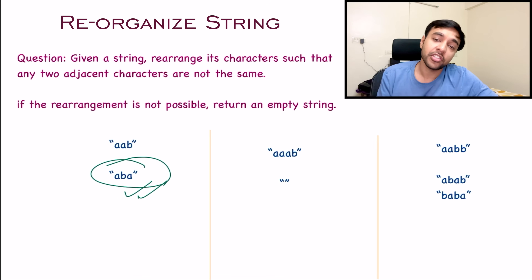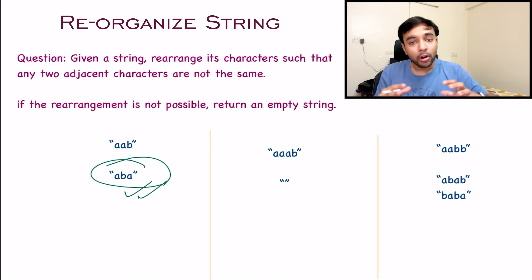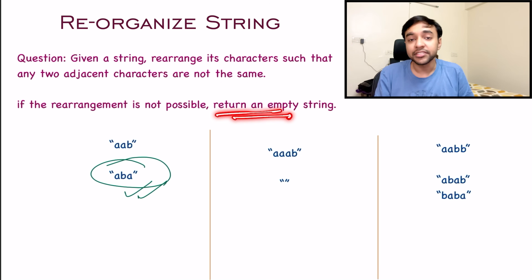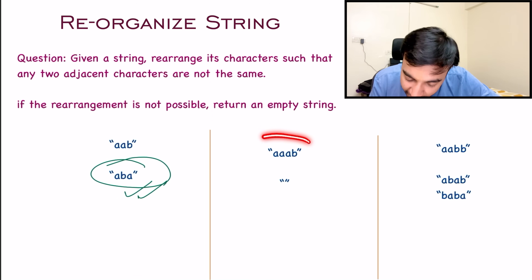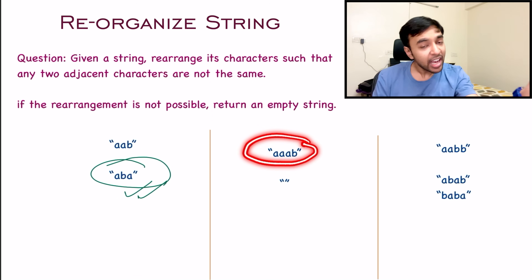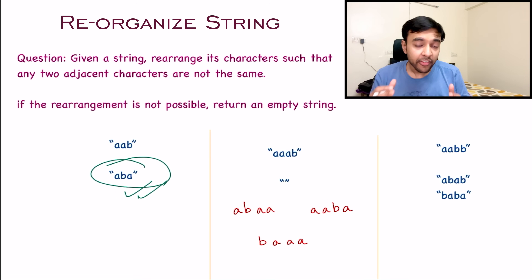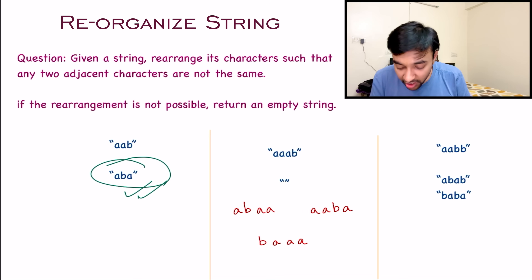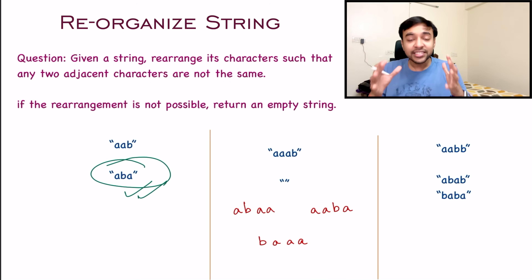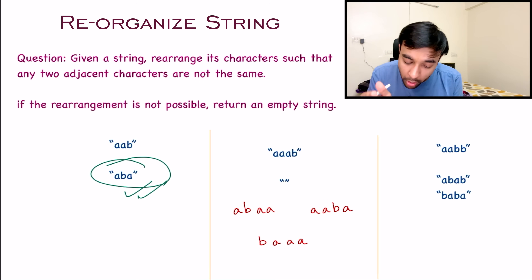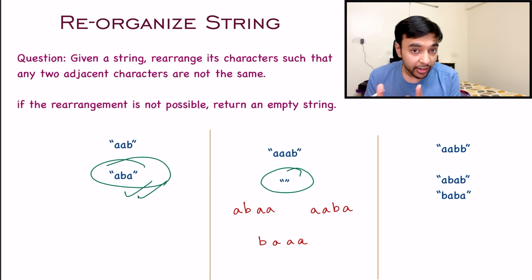This problem also mentions that if you cannot form any such string, then you have to return an empty string. We can see that in test case number two, with the string A, A, A, B. No matter however you arrange its characters, you can never reach a scenario where any two adjacent characters are not the same. In all of these cases, there is at least one character which is same as its adjacent character. So for this particular test case, you just need to return an empty string as your answer.